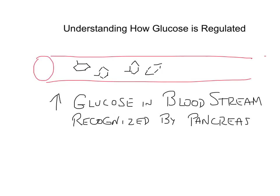Hi students. Today we talked a little bit about how glucose in your bloodstream is regulated. In particular we were discussing how the GLUT4 receptor, which is a transmembrane domain containing protein found on both fat and skeletal muscle cells, is regulated by the hormone called insulin.